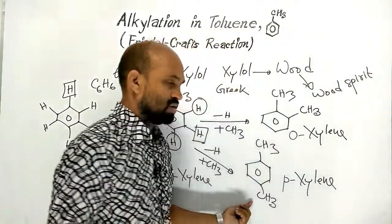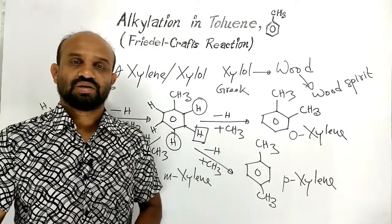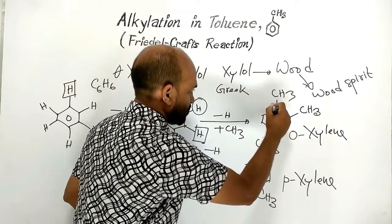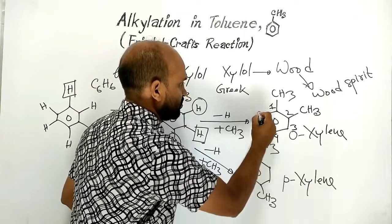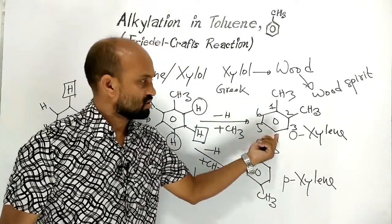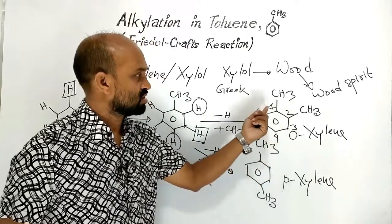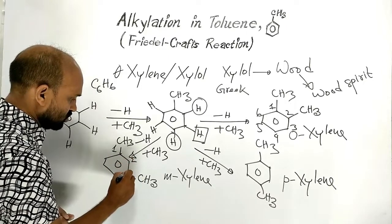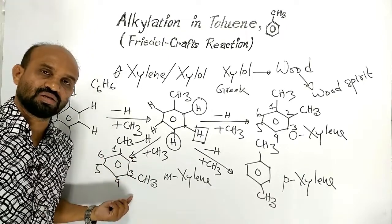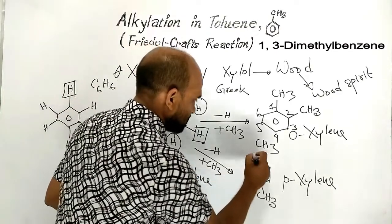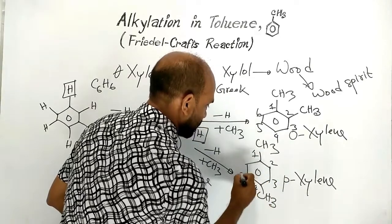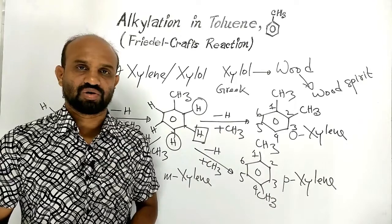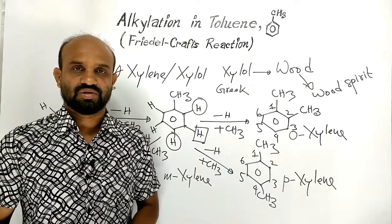When the carbon atoms are numbered 1 through 6, ortho-xylene is named 1,2-dimethylbenzene, meta-xylene is named 1,3-dimethylbenzene, and para-xylene is named 1,4-dimethylbenzene. Simply, these dimethylbenzenes are called xylenes or xylols.